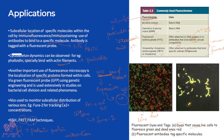FRAP — Fluorescence Recovery After Photobleaching — is used to observe molecular movement. I can bleach the plasma membrane and observe how fluorescent molecules recover, allowing me to see the diffusion of molecules and dynamic movement.